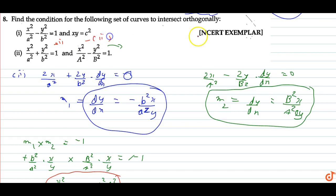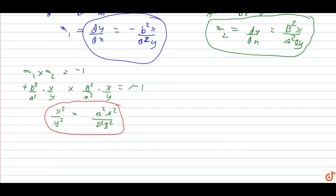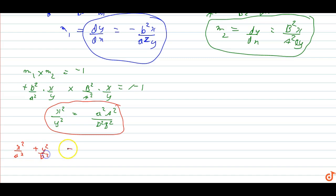Now taking the first equation minus the second equation: x-square upon small a-square plus y-square upon small b-square, minus x-square upon capital A-square plus y-square upon capital B-square equals zero.